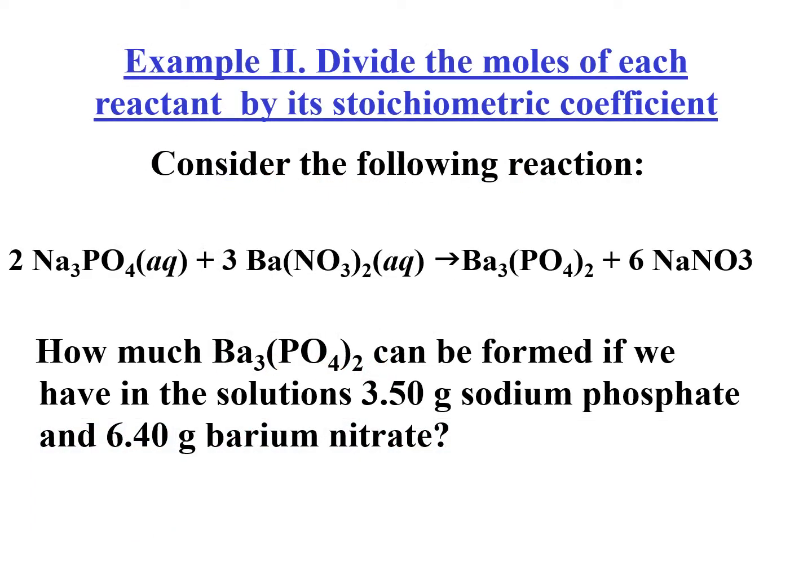Ito naman sa procedure two. Divide the moles of each reactant by its stoichiometric coefficient. Ito yung given reaction. Ang coefficient ay 2, 3, 1, 6. How much barium phosphate can be formed if we have in the solution 3.5 grams of sodium phosphate? Grams ito. 6.4 grams of barium nitrate.